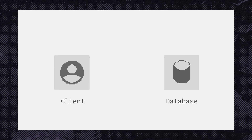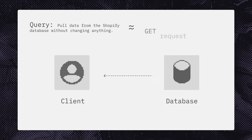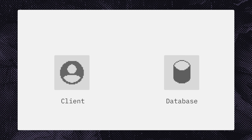There are two main actions you can achieve with GraphQL. The first is a query, which lets you pull data from Shopify's database without changing anything. This is similar to a GET request in the REST API.